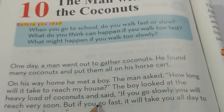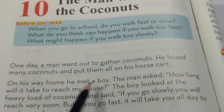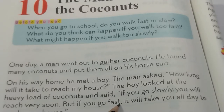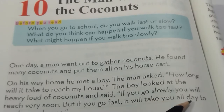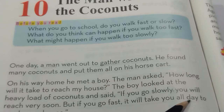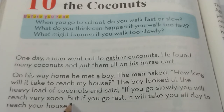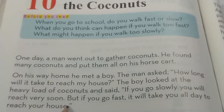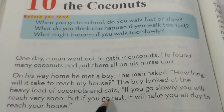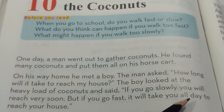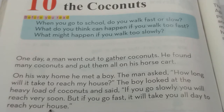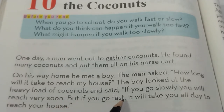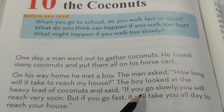But if you go fast, it will take you all day to reach your home. Agar aap teezi se jaoge, to aapko poora din lagega ghar pahunchne mein. In a conditional sentence, the first clause (if-clause) is in simple present tense, a comma is placed after it, and the second clause is in future tense. The boy's words are inside quotation marks, and the full stop is placed inside the closing quotation mark.